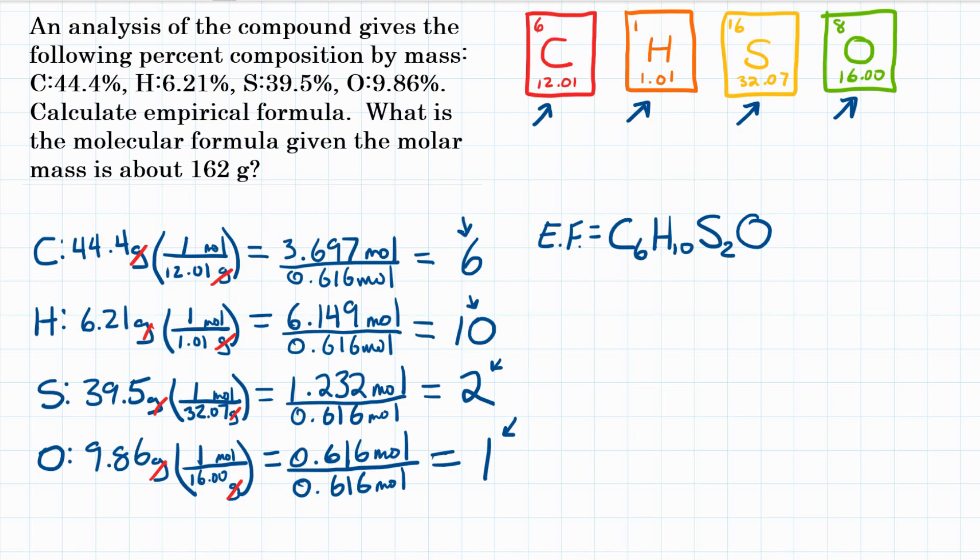Now, the molecular formula, which is what we want in the end, the actual formula, which could be this, or it could be some multiple of these subscripts. That's what we're looking for. The molecular formula has a molar mass of about 162 grams. So we know the molar mass of the molecular formula. We want to figure out the molar mass of the empirical formula.